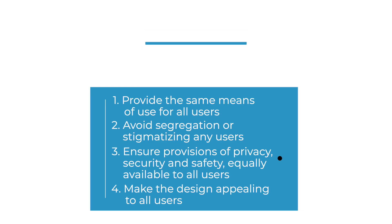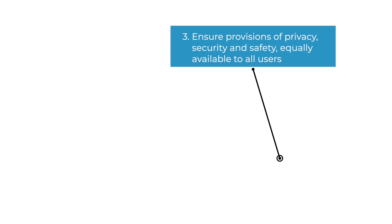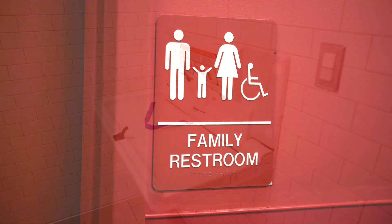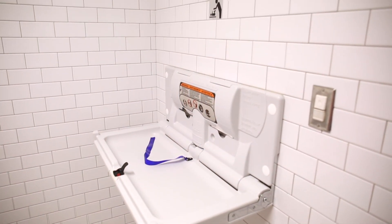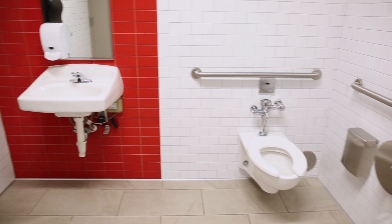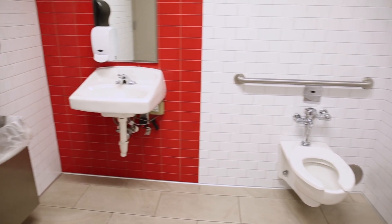It all had to be all for one and one for all in terms of how we approach it in a very shared and inclusive environment. Third, ensure provisions of privacy, security, and safety, which should be equally available to all users. Designs like family restrooms provide privacy and security for users who may need assistance. Safety is also important so users are not injured when using a design.